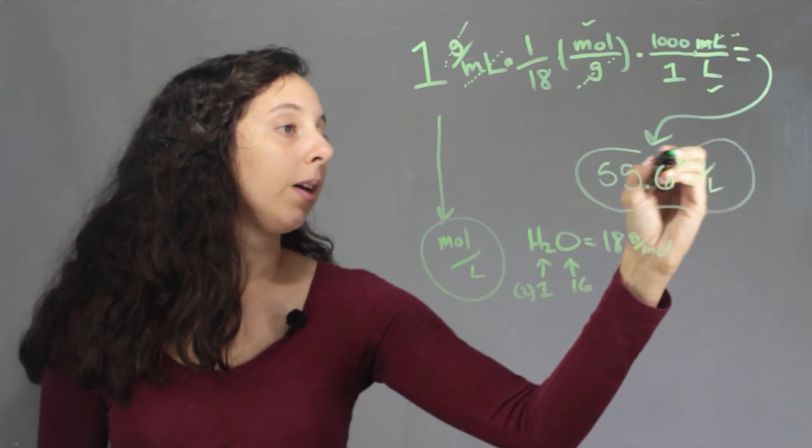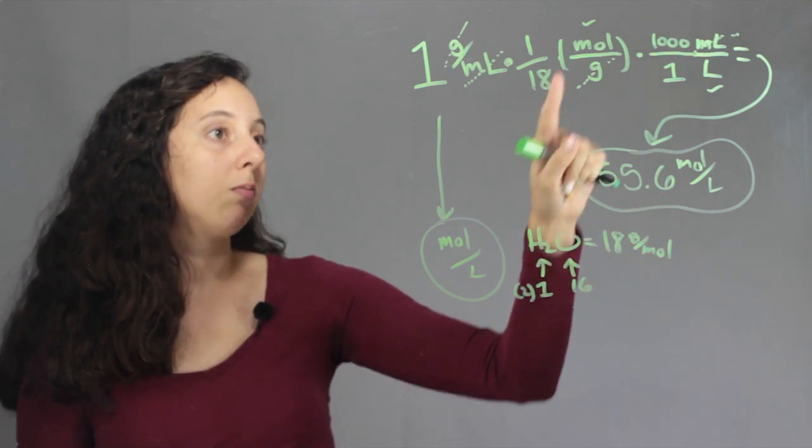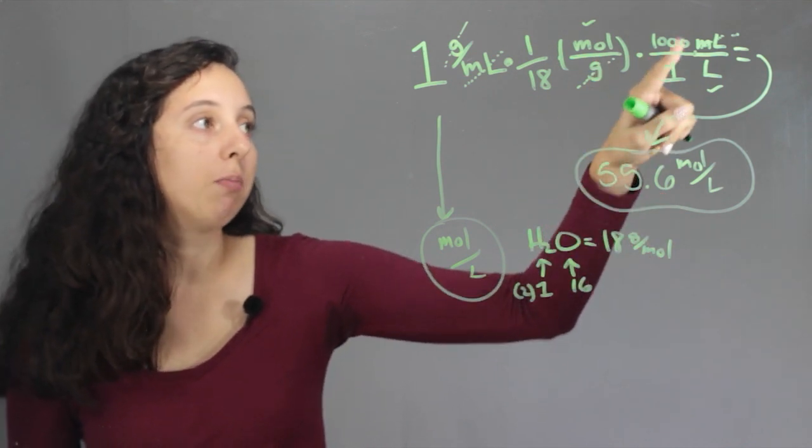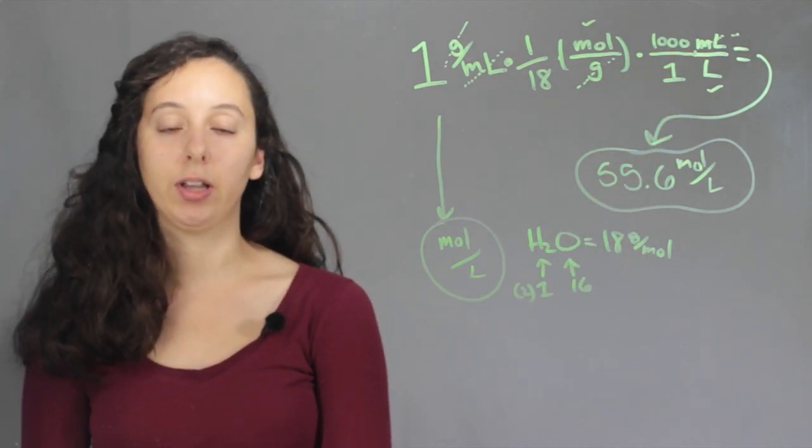So to convert from the density of water to the molarity of water, we just have to multiply by the reciprocal of the molar mass and do a conversion from milliliters to liters. I'm Robin Higgins and this has been conversion from density to molarity.